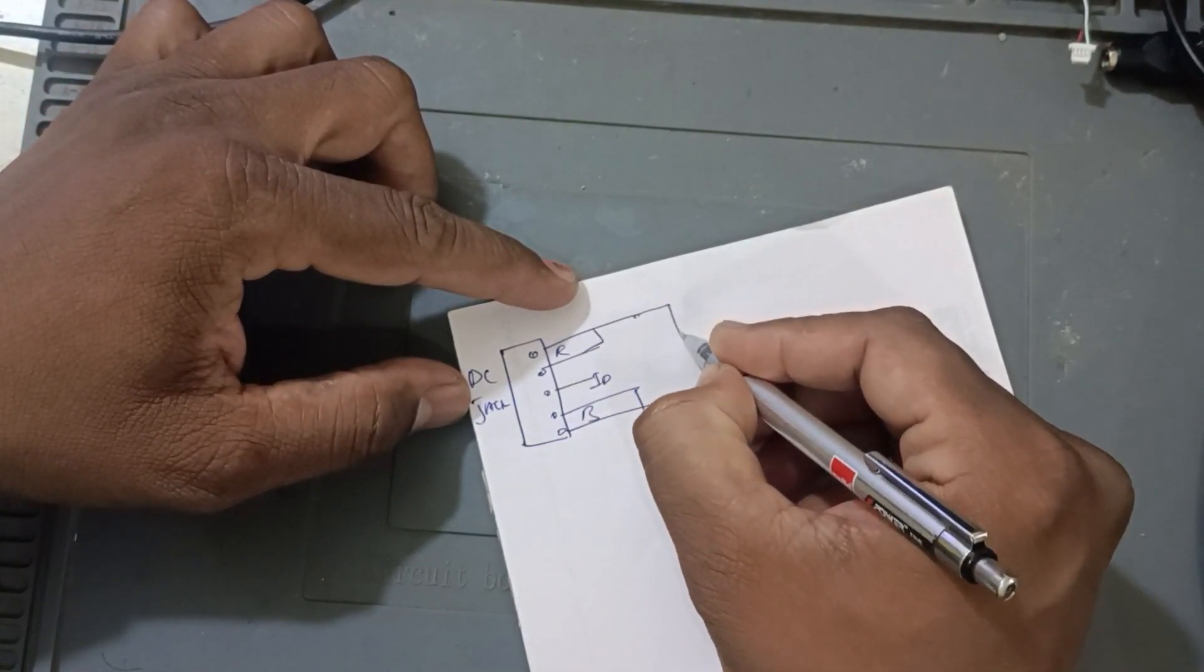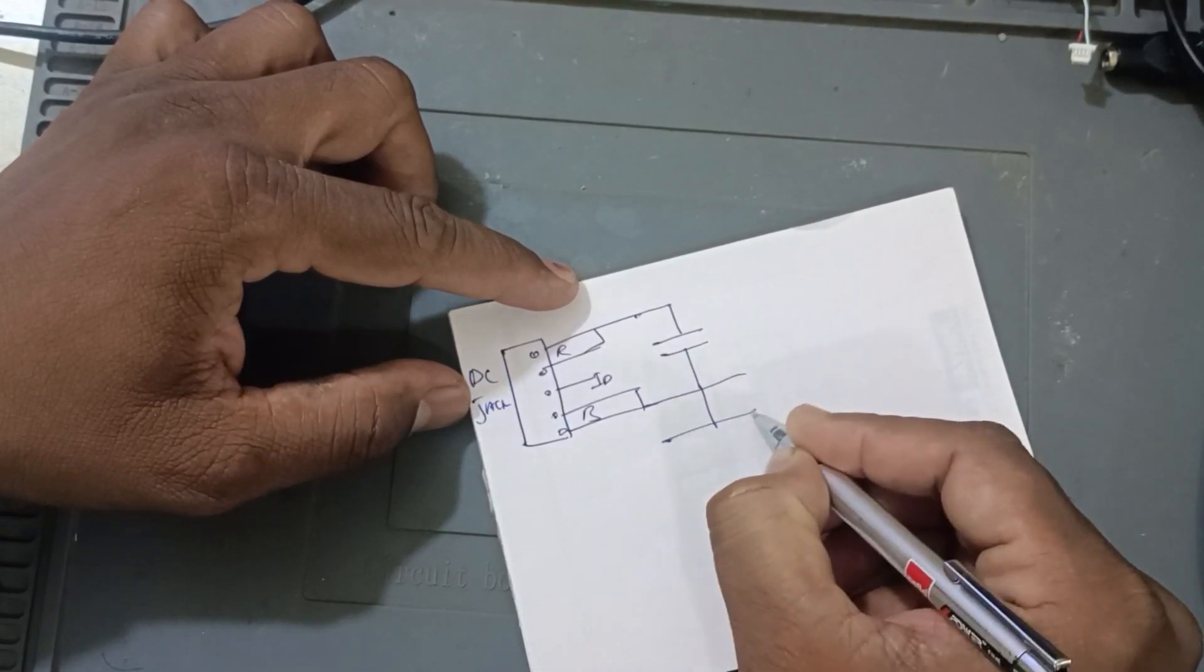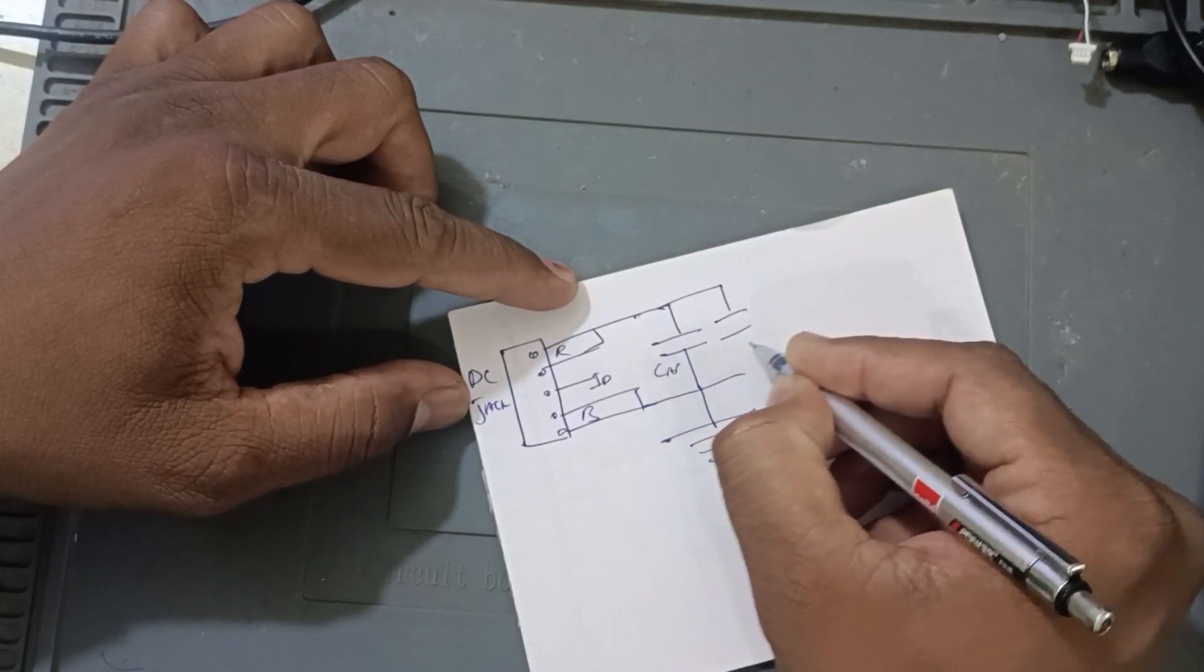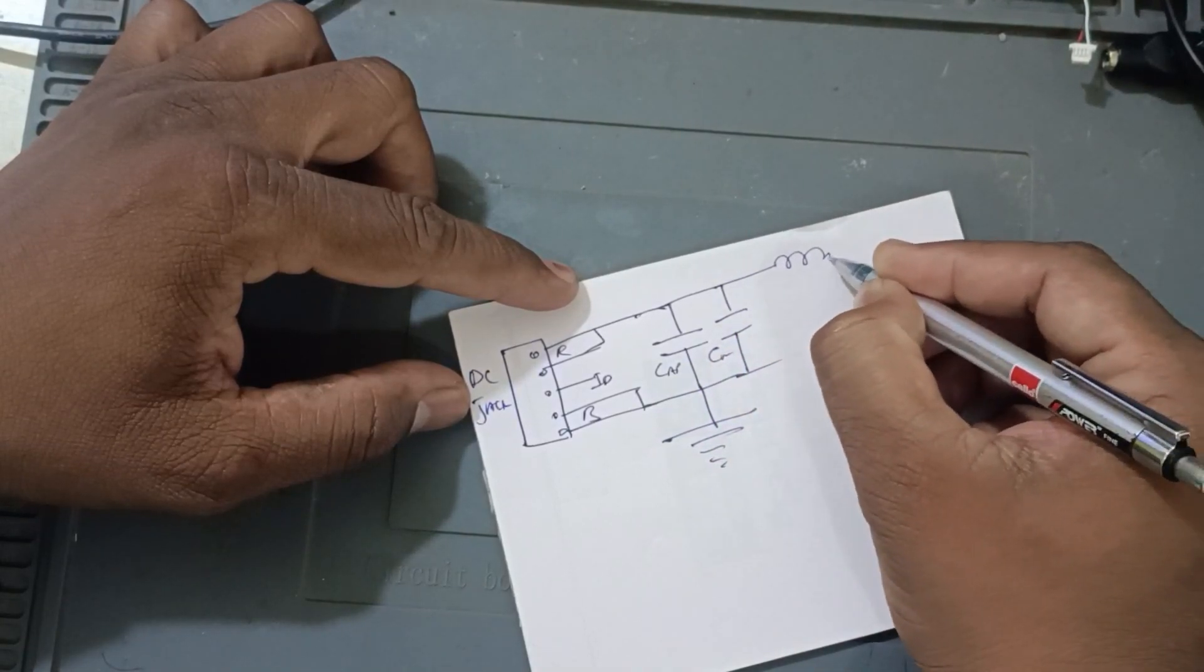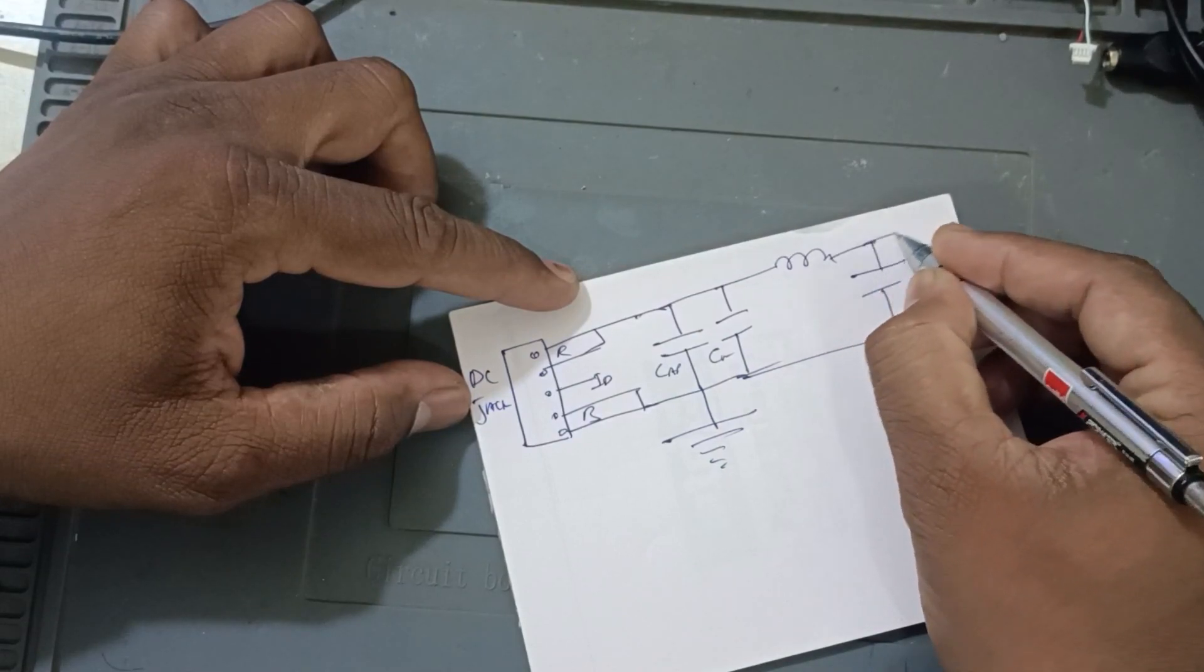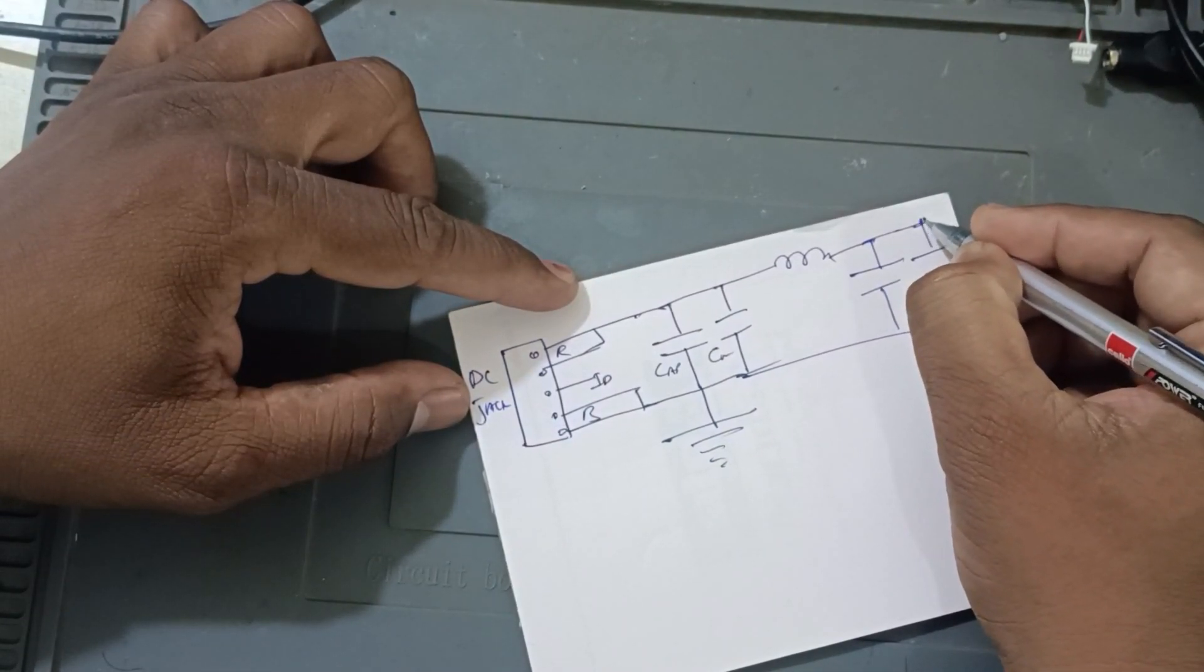After this, a capacitor has given like this. This is the ground, obviously. Okay, one capacitor, cap, there is a second cap and after that inductor, after that again a cap, again a cap and here is the V in.